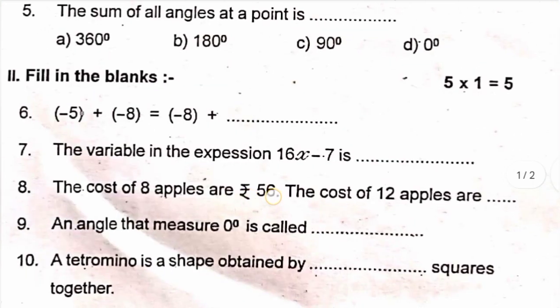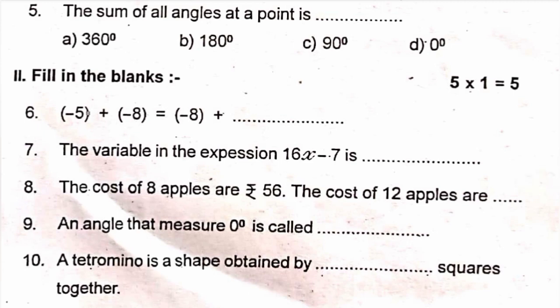Moving to Roman numeral 2 — fill in the blanks. Question 6: minus 5 plus minus 8 equals minus 8 plus dash. This is the addition properties — the properties of addition pattern. You can see the answer; if you have any doubt, comment in the comment section. Question 7: the variable in the expression 16x minus 7 is dash.